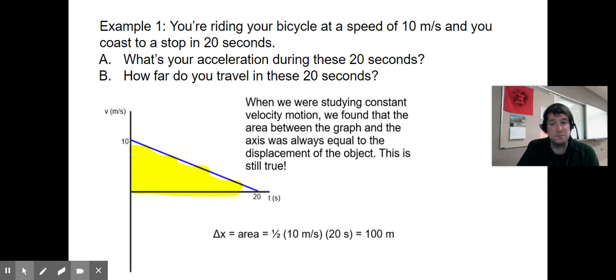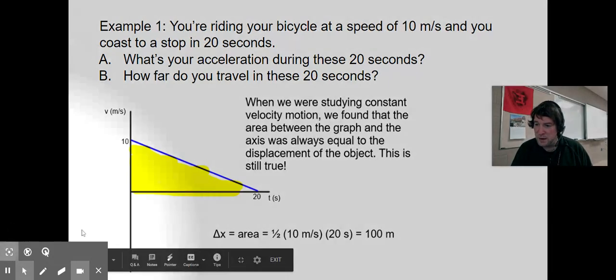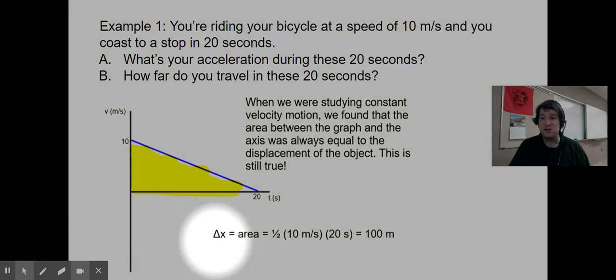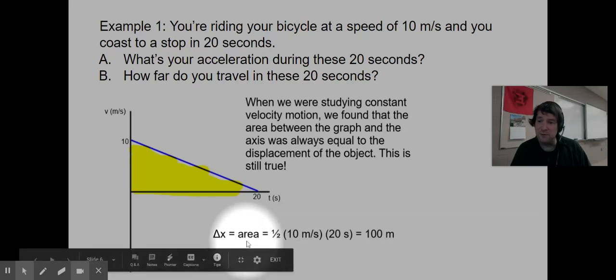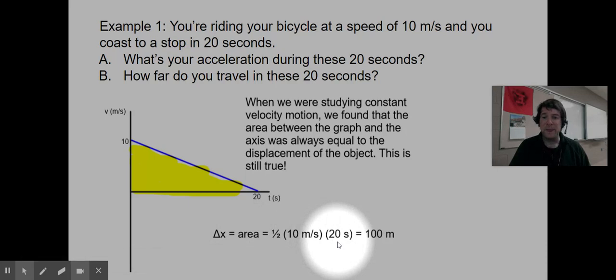And something that we learned sometime when we were younger is that the area of a triangle is half times the width of the triangle times the height of the triangle. Or maybe you remember half times base times height. It doesn't matter what we call the width or base or whatever. But we multiply half times one dimension of the triangle times the other dimension of the triangle. And I'm writing here delta x. Let's remember that delta x is the change in x where x is position. Delta x, the change in position is displacement. So displacement is the area of that graph. And the area of that graph, it's just a triangle. Half times, we have a triangle that's 10 meters per second tall times 20 seconds wide.